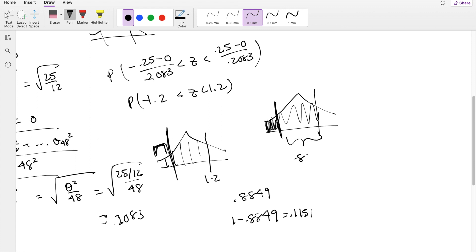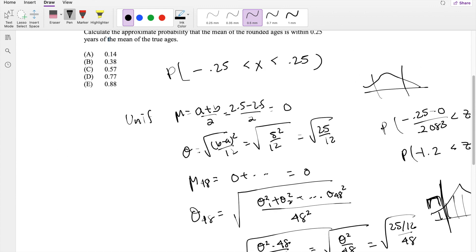So it's going to be 0.8849 minus 0.1151, which is equal to 0.769, which is our answer D.